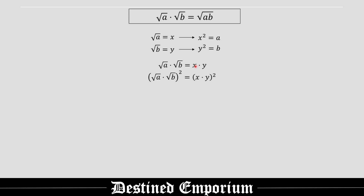We are then going to square both sides of this equation, the left-hand side and right-hand side respectively. On the right-hand side, you'll notice straight away you do not need to use FOIL — you have a product, so you just distribute the square to the x and to the y variable. The right-hand side becomes x squared times y squared.